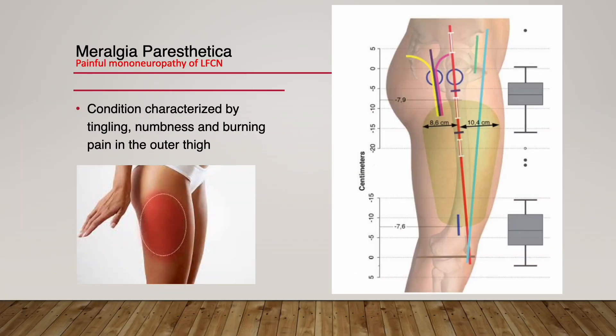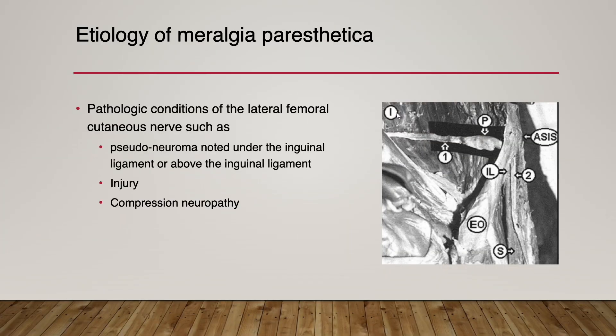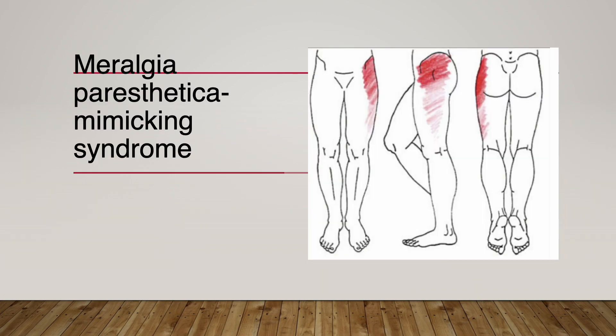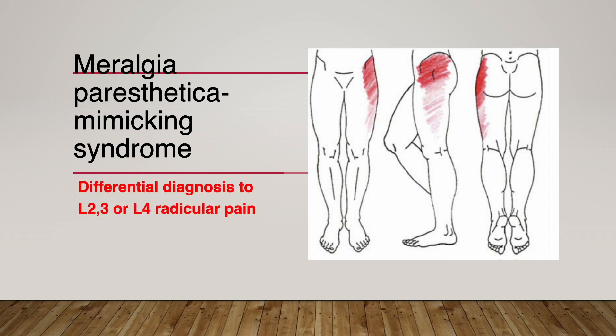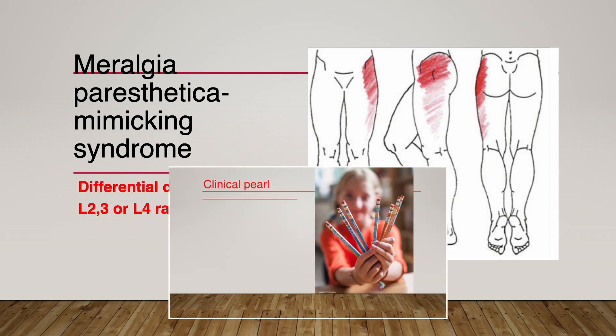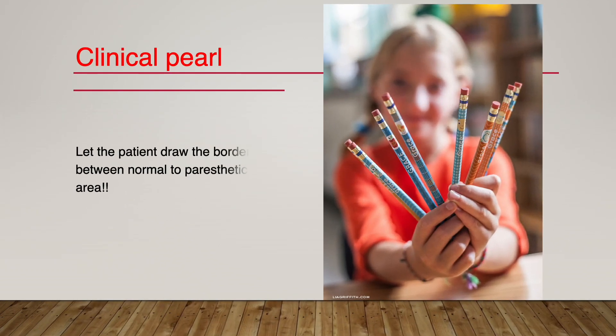Meralgia paresthetica is a condition characterized by tingling, numbness, and burning pain in the outer thigh, and neuropathy of the lateral femoral cutaneous nerve is the leading cause. However, spinal radicular pain mimics meralgia paresthetica, making diagnosis challenging. Here is my clinical tip on how to tell the difference.